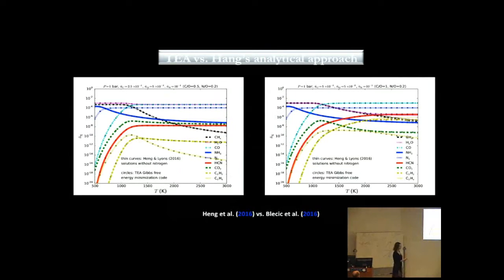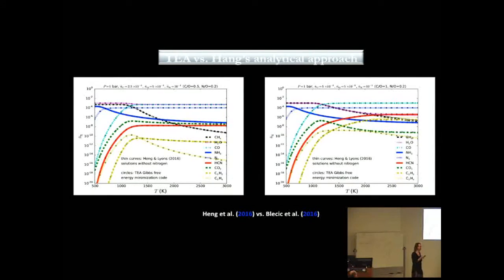Recently, Heng used TEA to test his new analytical approach that he developed. He developed a set of equations to calculate chemical equilibrium. As you can see here, a perfect match is produced with TEA.